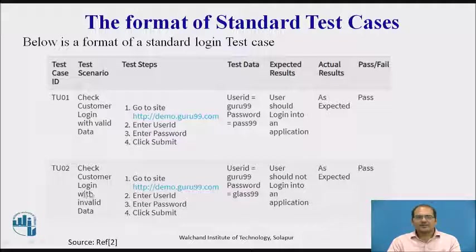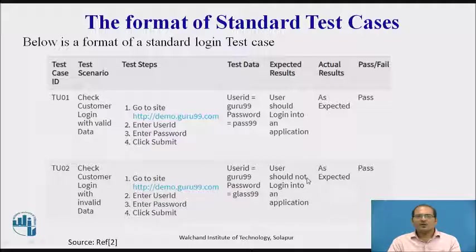The next test case checks customer login with invalid data. For this, the same steps are followed, but the test data is an invalid username and password. The expected result is that the user should not login to the application. The expected result and actual result should match, so the test case is passed. However, if login is successful when providing invalid username and password, then the test case is failed.